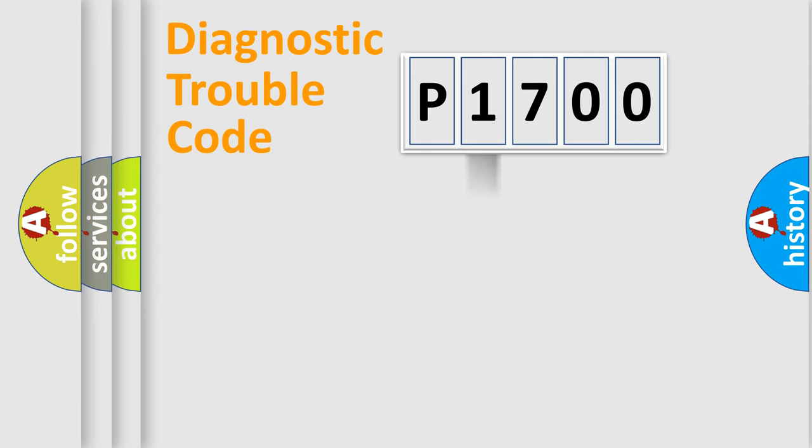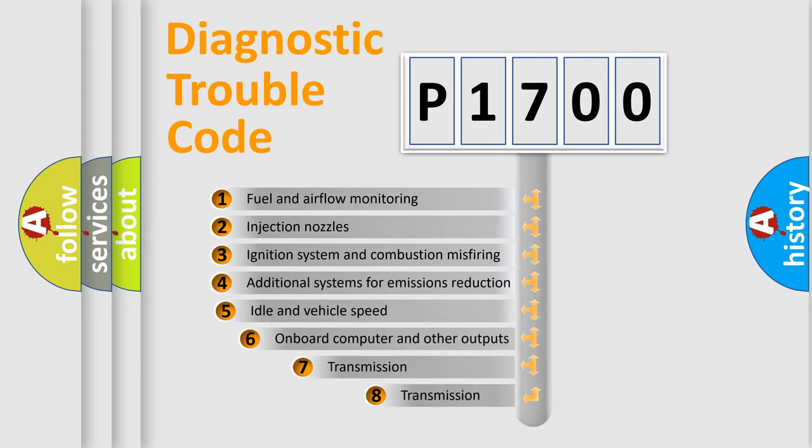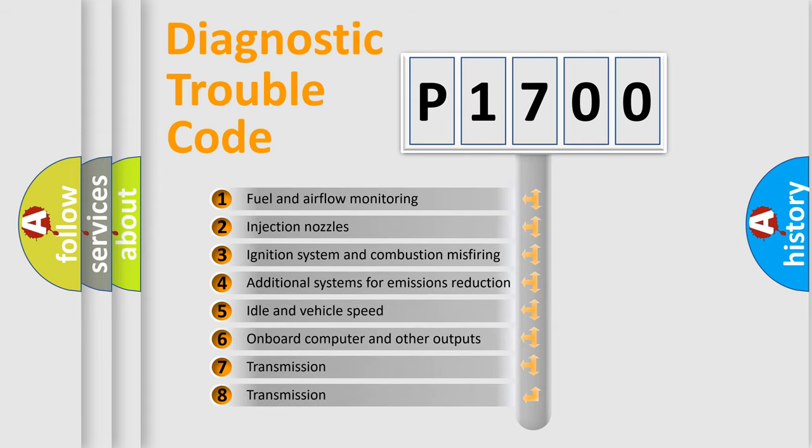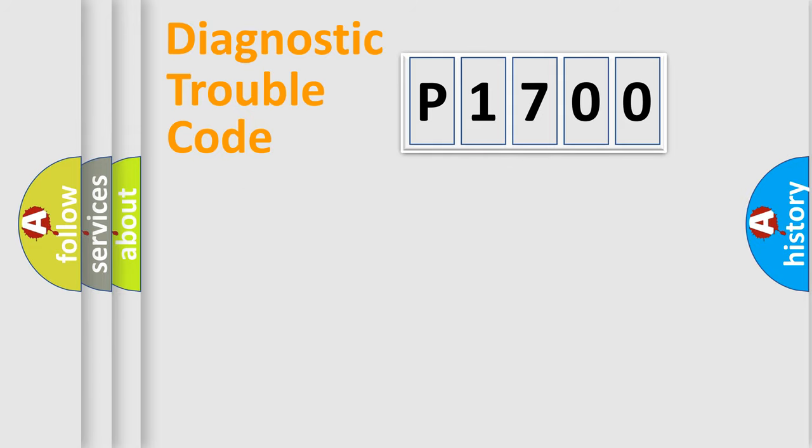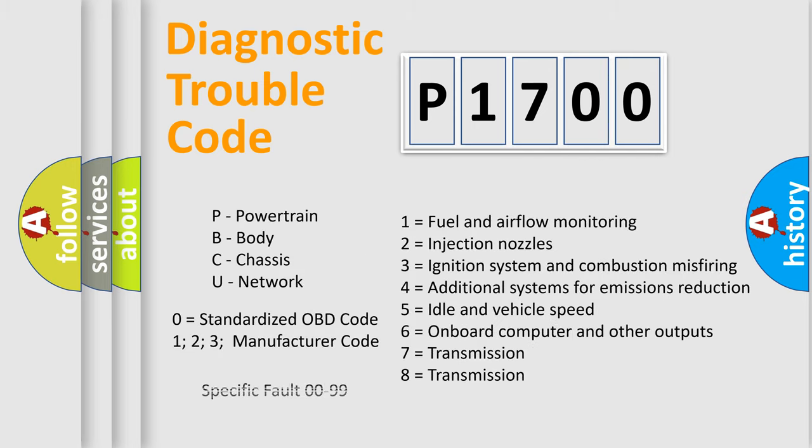The third character specifies a subset of errors. The distribution shown is valid only for the standardized DTC code. Only the last two characters define the specific fault of the group. Let's not forget that such a division is valid only if the second character code is expressed by the number zero.